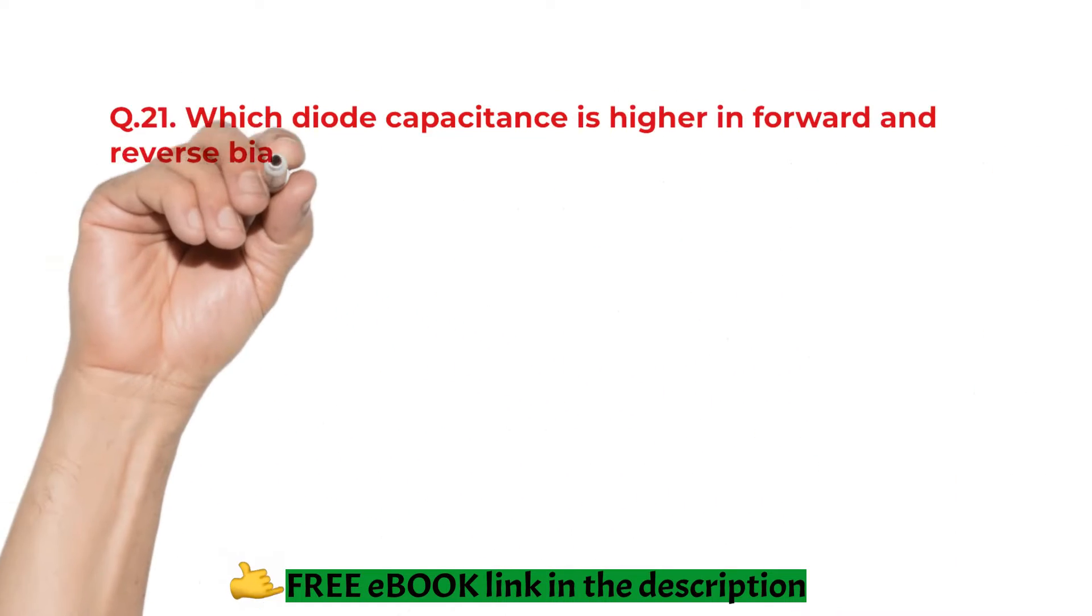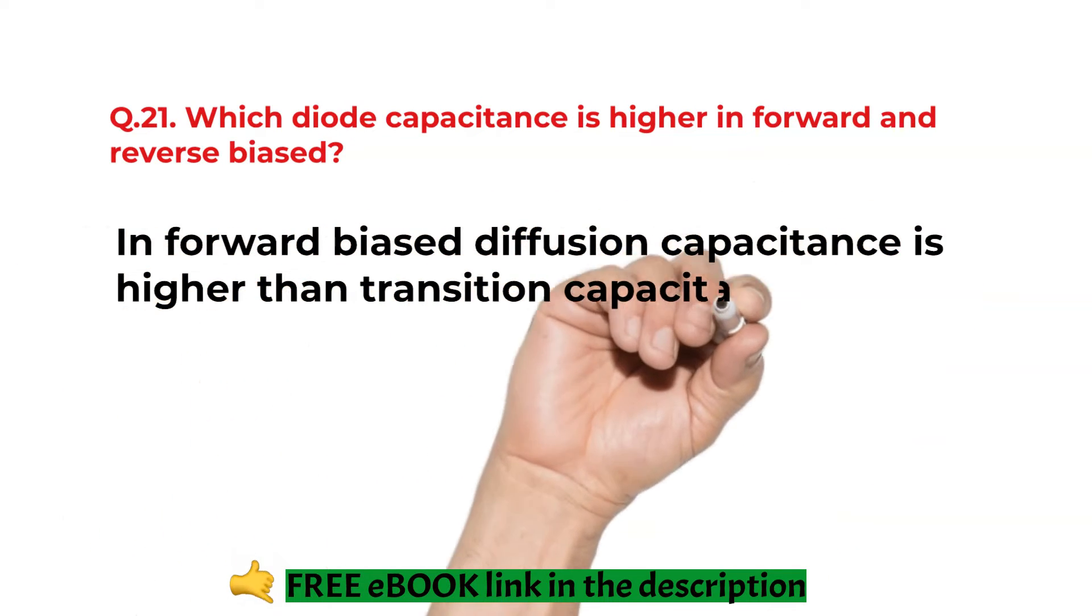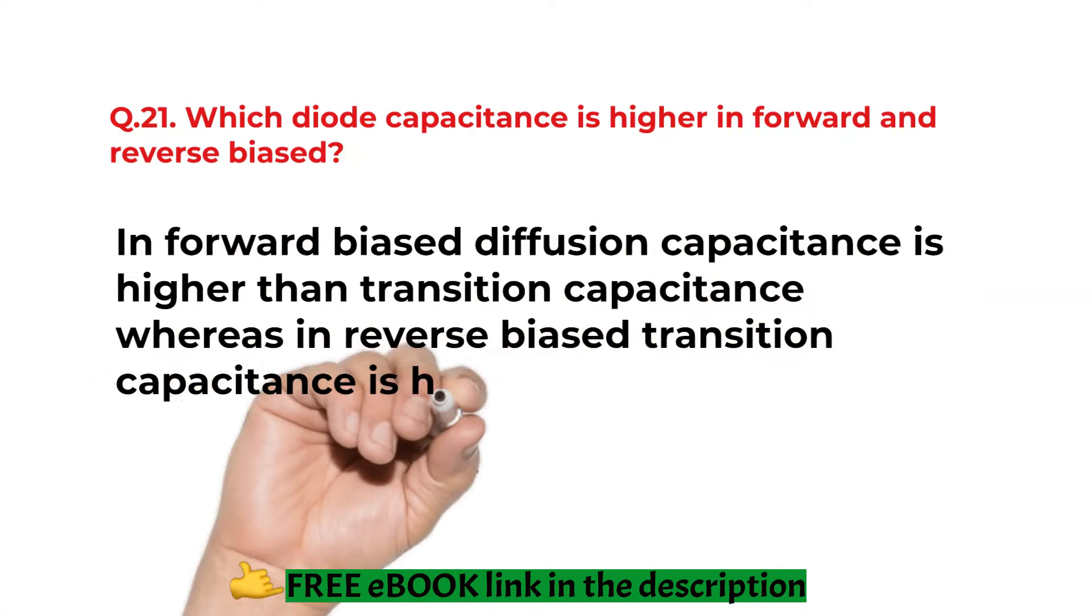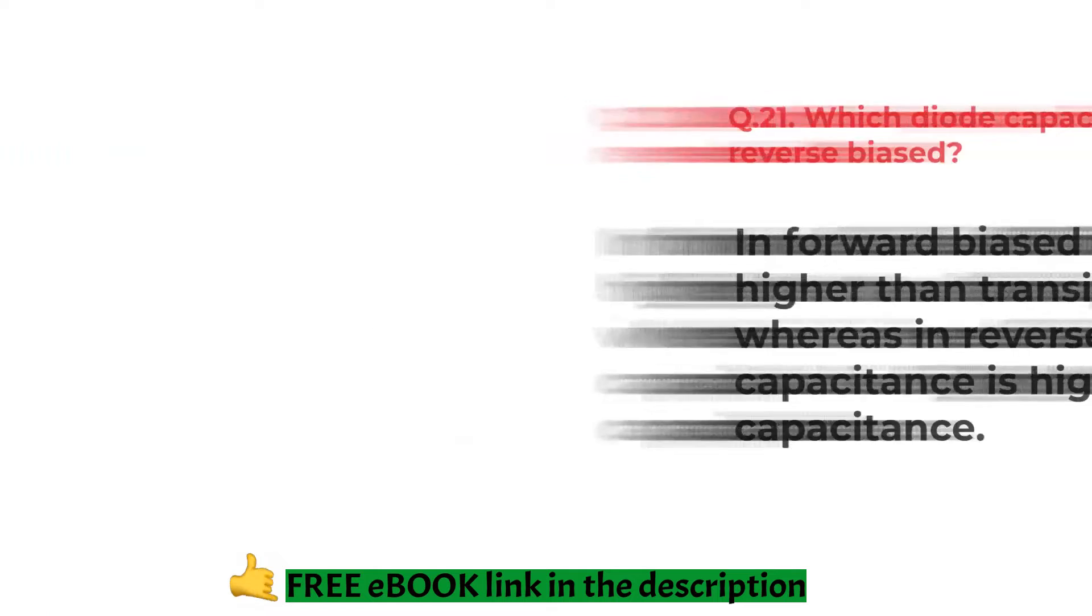Which diode capacitance is higher in forward and reverse? In forward biased diffusion capacitance is higher than the transition capacitance whereas in reverse biased transition capacitance is higher than the diffusion capacitance.